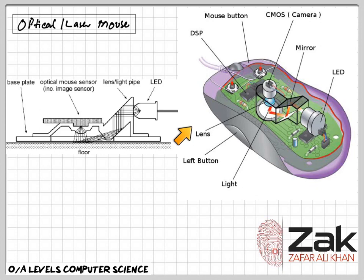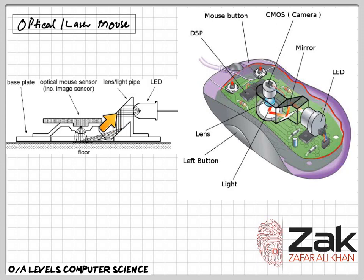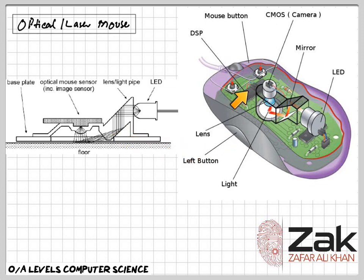The sensor continuously takes pictures. As the mouse moves, it takes pictures quickly — sometimes 1500 to 1600 images per second — fast enough so that sequential pictures overlap. The rest of the work is handled by the optical navigation engine through a patented image processing algorithm in the DSP.